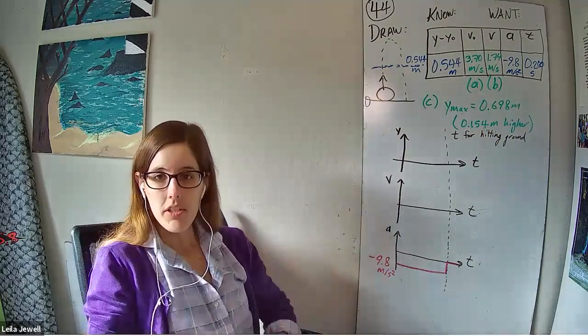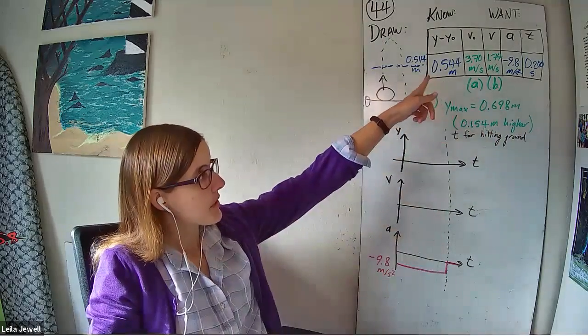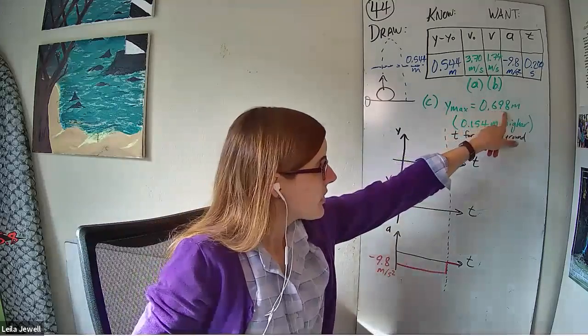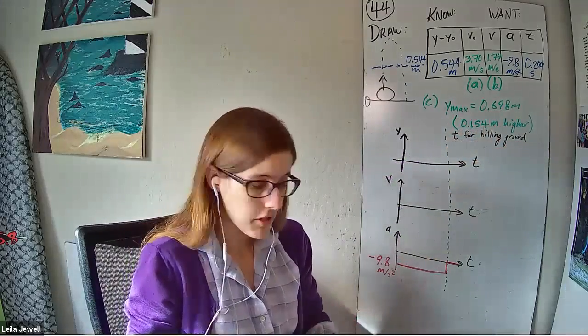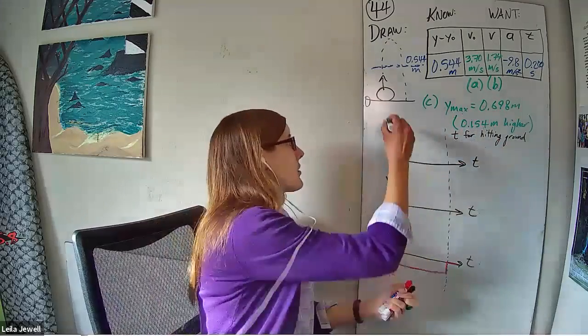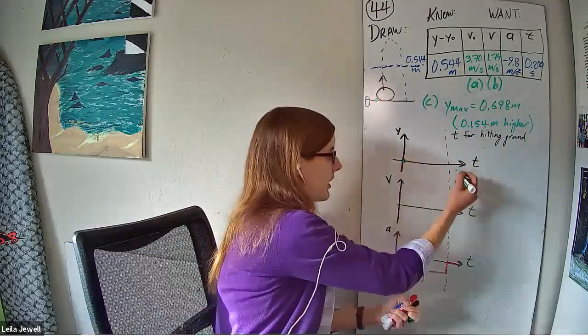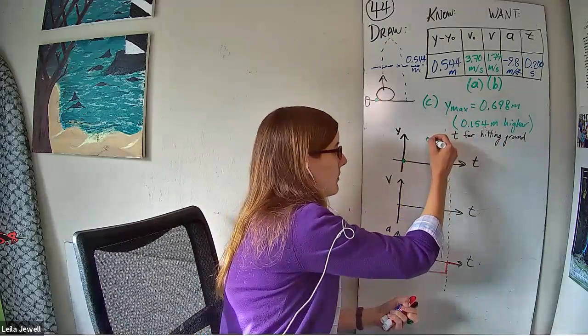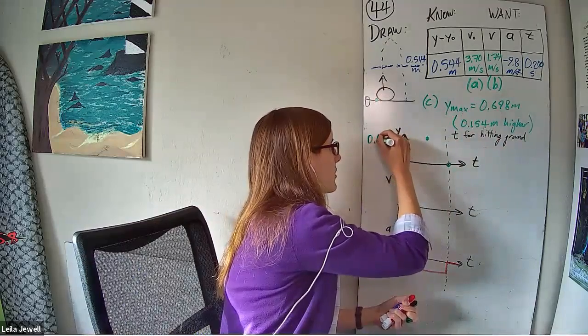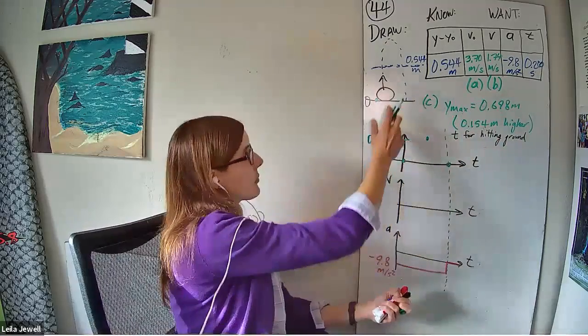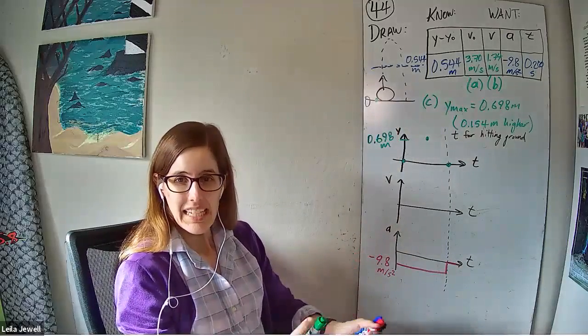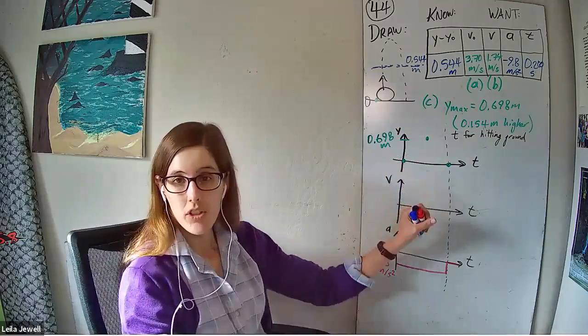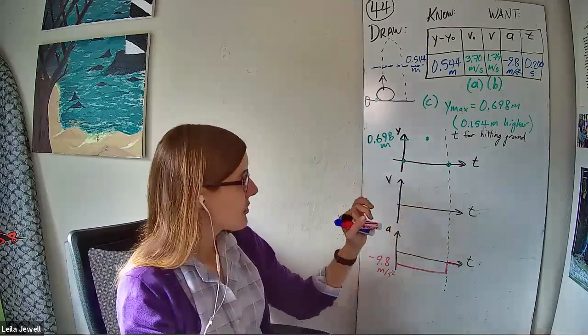All right, now for the position and the velocity graphs, this is where we can use our data points that we have. So notice we know our y max is 0.698 meters, and we also know where our armadillo starts. Our armadillo starts on the ground, right? That y is equal to zero and finishes on the ground. Ultimately, our armadillo hits and so there's this maximum height that will be right in the middle, and we can label that as our 0.698 meters. We could also fill in our 0.544 meters, but that's not as critical, and we don't know exactly where that will be between these points. So notice I'm not even trying to put a curve or a line yet. I'm just looking at my data points.